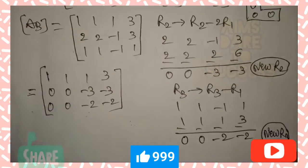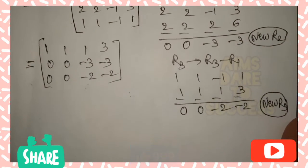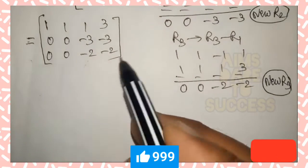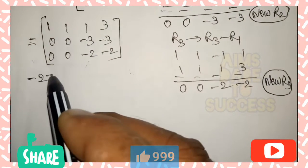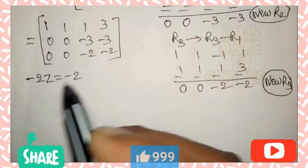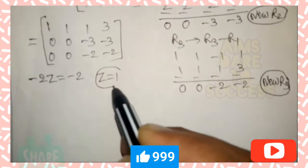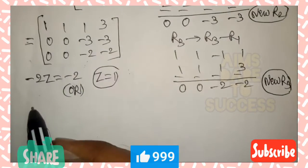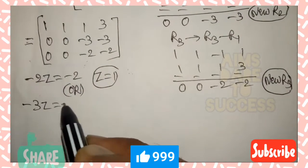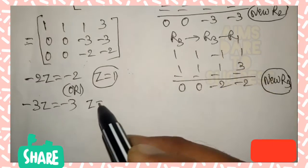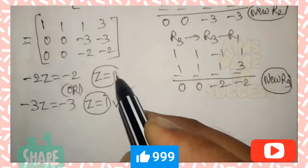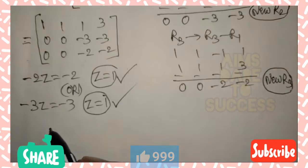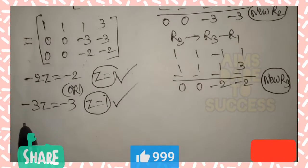Rows 2 and 3 give the same result, so no problem — continue. From row 3: -2z = -2, so -2 cancels and z = 1. From row 2 as well: -3z = -3, so z = 1. We get the same value of z from both rows.